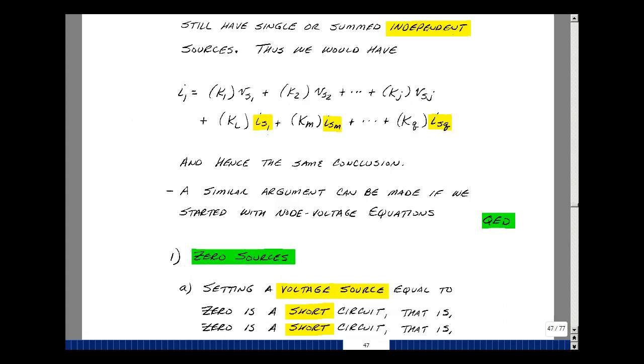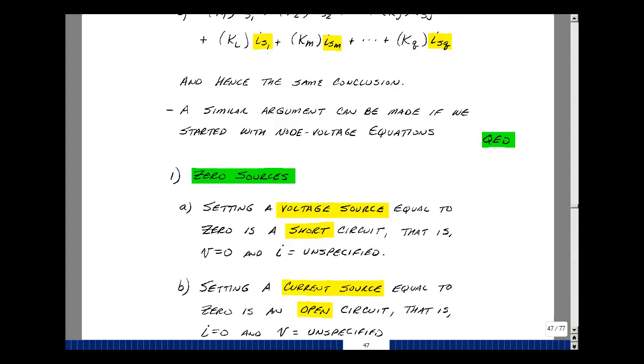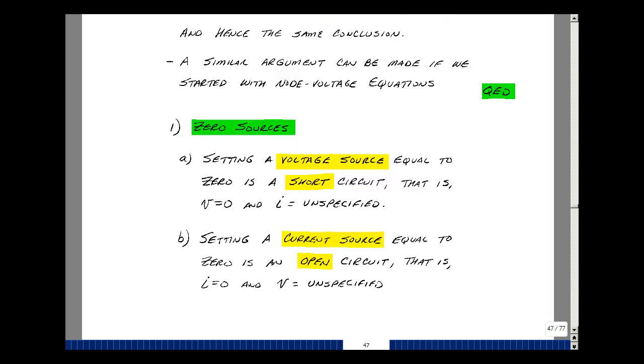Now, in this property, we talked about setting voltage sources and current sources equal to 0. So let's review how we're going to do that. Setting a voltage source equal to 0 is our definition of a short circuit. The voltage is 0 and the current is arbitrary or unspecified. Setting a current source equal to 0 is our definition of an open circuit, where the current is 0 and the voltage across the terminals of the open circuit is unspecified or arbitrary.